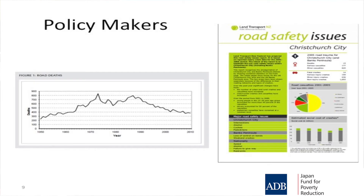Some of the outputs that stakeholders like to see are very simple graphs showing the change over time in crashes — easy to understand. This is the year; this is the number of deaths. Crashes increased, then decreased. Very basic information for policy makers, who often have a limited amount of time to read documents and understand the data.